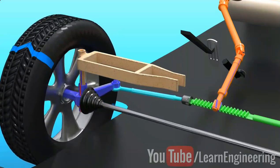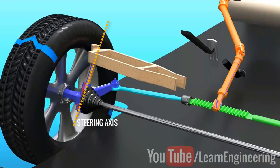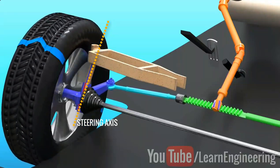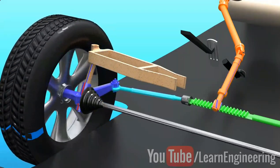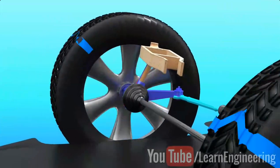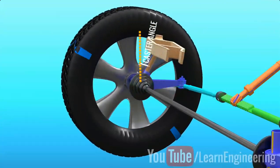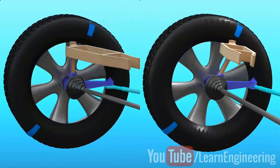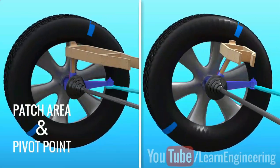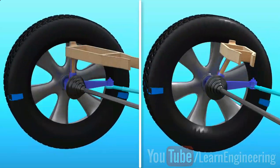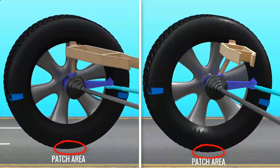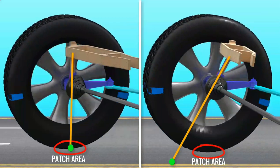If we steer the wheel in the car, we can drive the steering wheel in the car. This is the pivot point. In the first mechanism, the pivot point is patching.